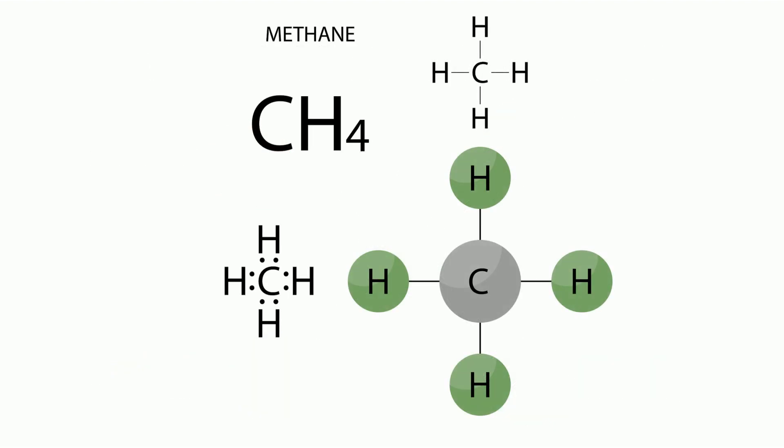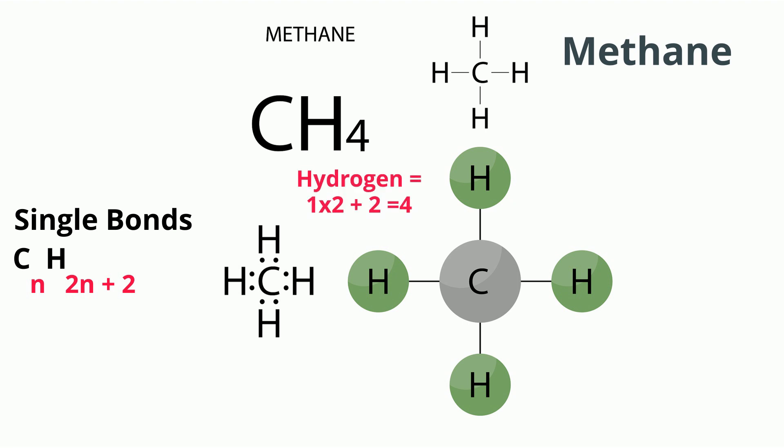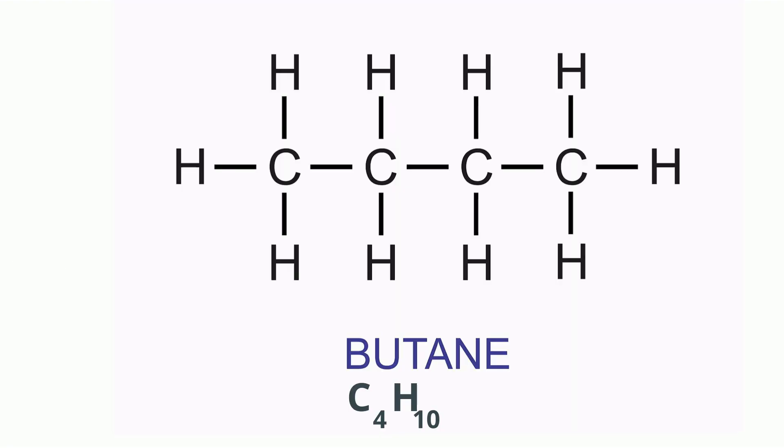Alkanes contain only single bonds. The general formula for alkanes is CnH2n plus 2. Let's look at an example. Methane is CH4. Following the formula, you have one carbon, and for hydrogen you take 1 times 2 and then add 2, which equals 4. How about another example? Butane is C4H10. For the hydrogen, it's 4 times 2 is 8, plus 2 is 10.